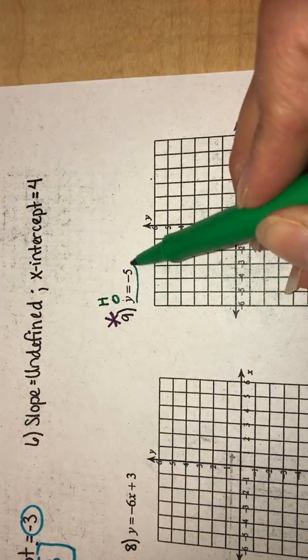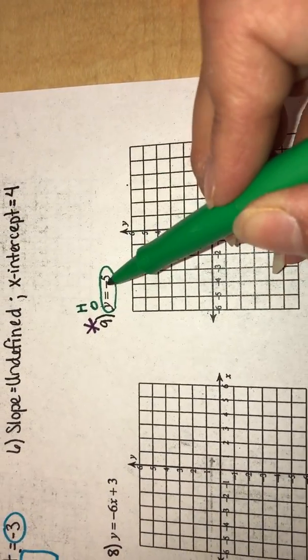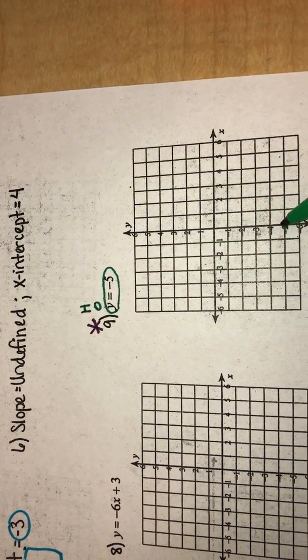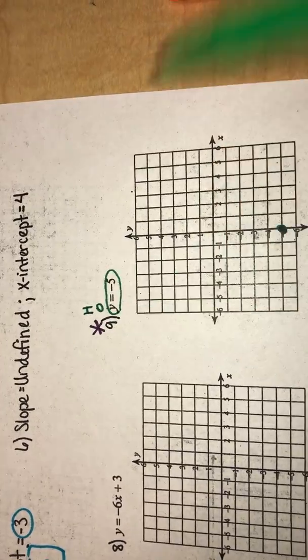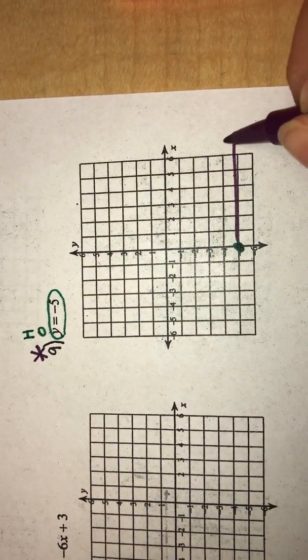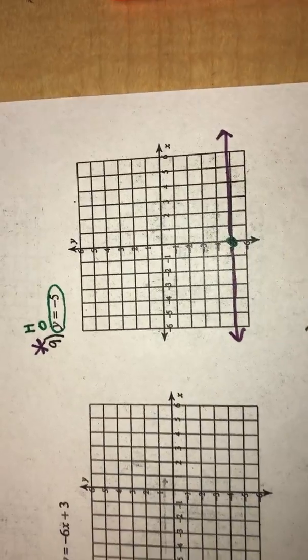So the only number that's given to me is that it's crossing negative five on the Y axis. So here's the Y. I go look for negative five. There it is. And the H tells me, hey, you got to draw a horizontal line right there. So there it is. And there's your graph.